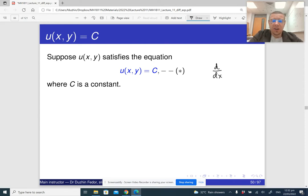How do we differentiate it with respect to x? We differentiate du/dx times dx/dx according to the chain rule plus du/dy times dy/dx, and the derivative of c is zero. So now dx/dx is just one, so by doing this, we get this.